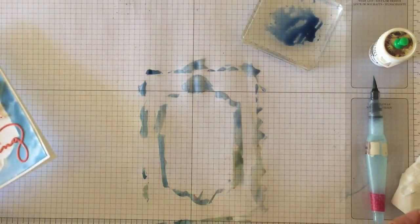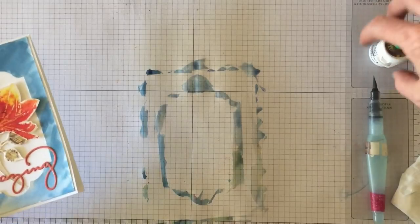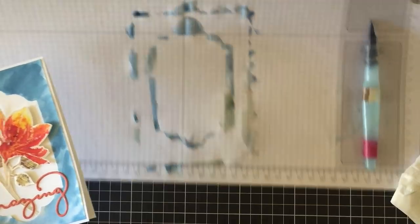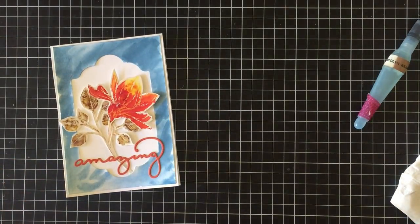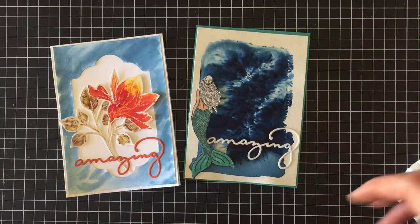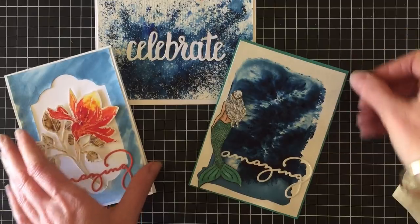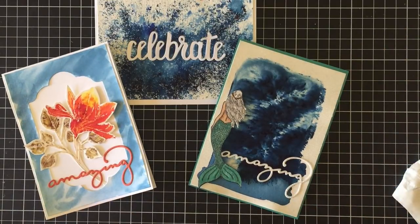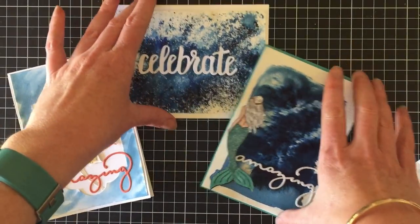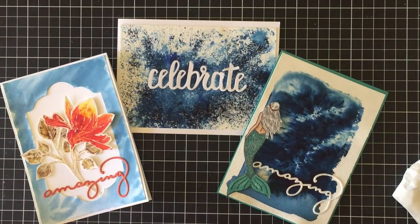So there you go. Three very different cards using the Brusho crystals. What do you think? Do you think you're interested in trying the Brusho crystals? I hope you do. You can also use starch that you use for ironing your clothes. That gives another effect as well. So lots of different techniques for using Brusho.